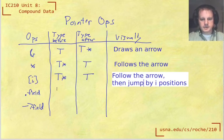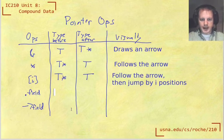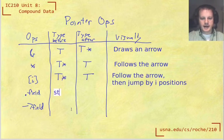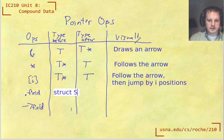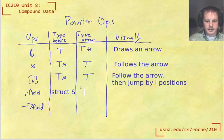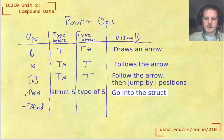Okay, now getting into these struct based things. If we apply the dot operator, the type beforehand has to be a struct type. And then what does it give us is whatever the type is of s in the struct definition. Of course, what does that mean? It just means going into the struct.